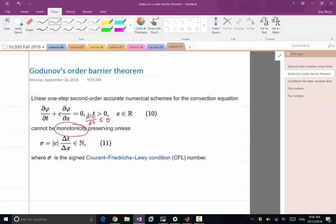And his theorem works for even the simplest conservation laws, that is the linear advection equations. And he said a linear one-step second-order accurate numerical scheme, even for a linear equation, cannot be monotonic.